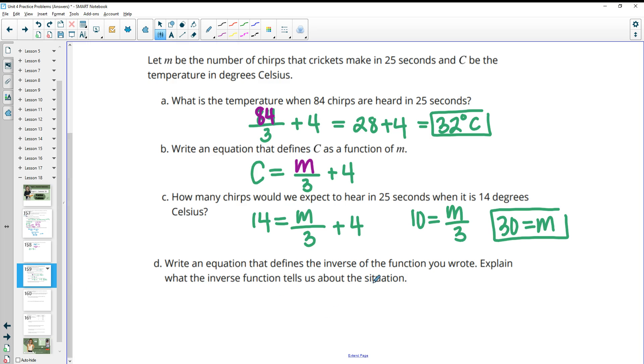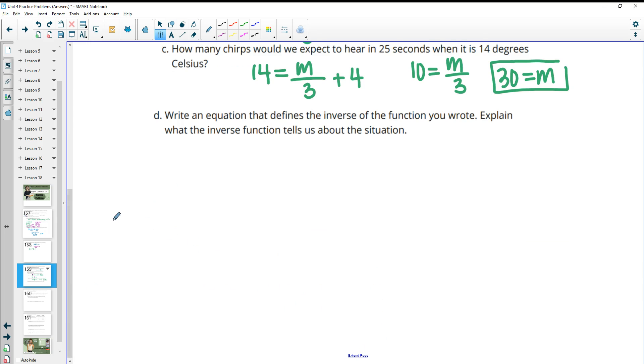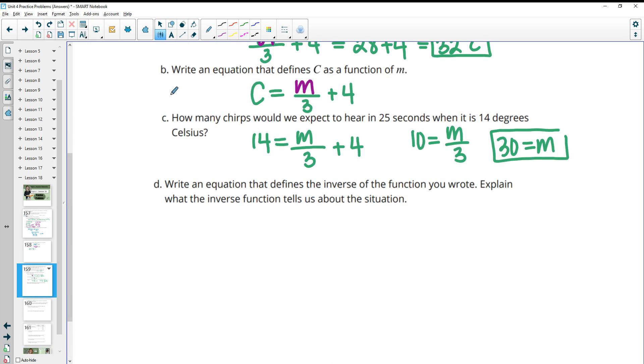So then it says write an equation that defines the inverse of the function that we wrote. So we want to do the inverse of this function in part B. We would take M divided by 3 first, and then add 4. So if we're going backwards, we're going to take C minus 4 first. Then we're going to take that number and multiply it by 3. That will give us our M.